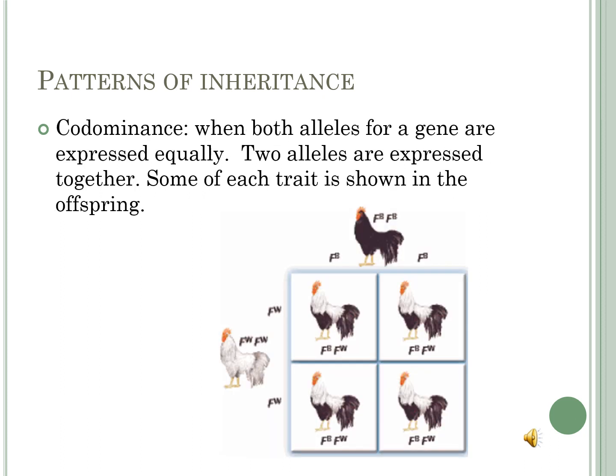Another type of complex pattern of inheritance is codominance. Codominance occurs when both alleles for a gene are expressed equally — two alleles are expressed together, and some of each trait is shown in the offspring. In the second figure on page 87, a white-feathered chicken is crossed with a black-feathered one. The result is neither black nor white — all the offspring have both white and black feathers. In the Punnett square, we write the alleles in capital letters with a subscript describing the trait: F for feathers, subscript W for white, subscript B for black. The offspring are FW and FB, meaning both traits appear, so they are white and black at the same time.